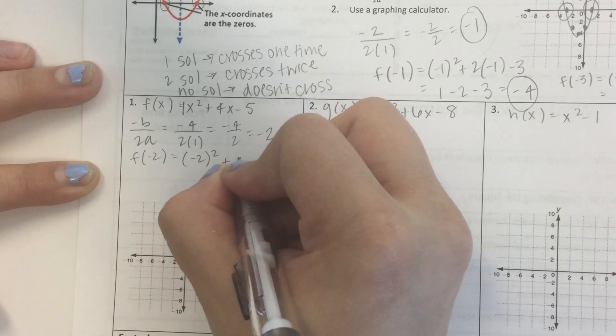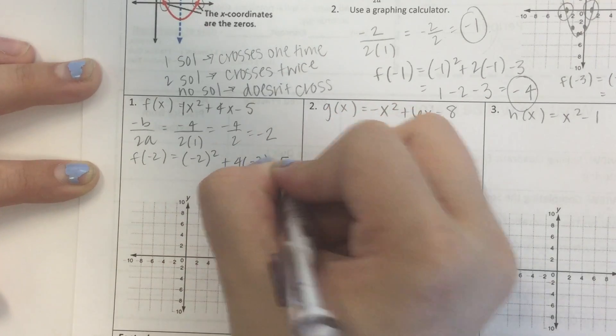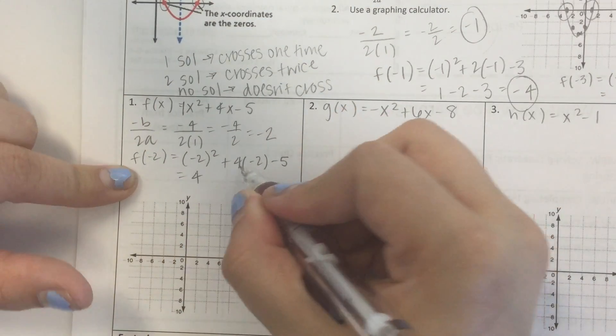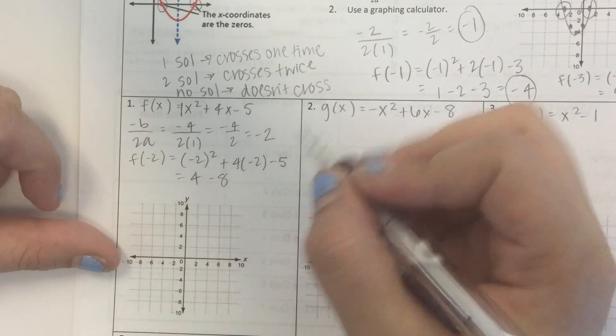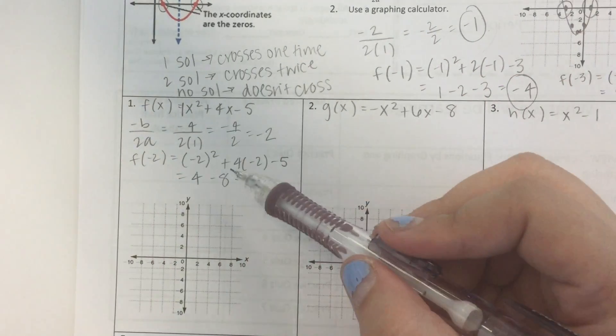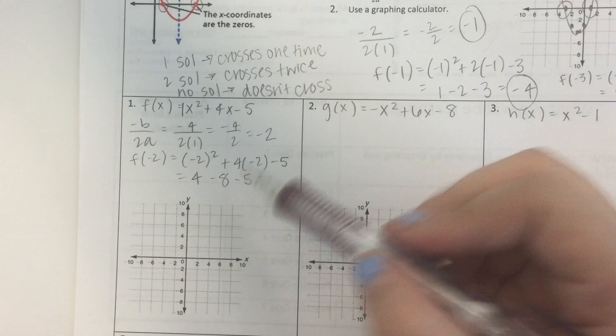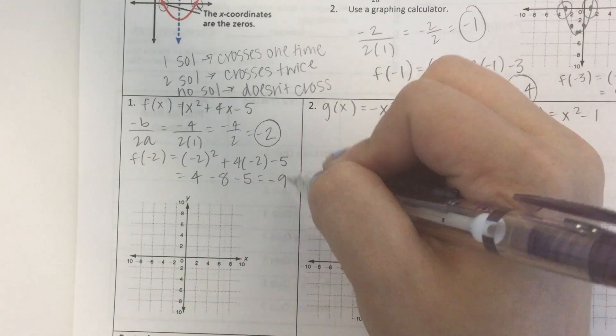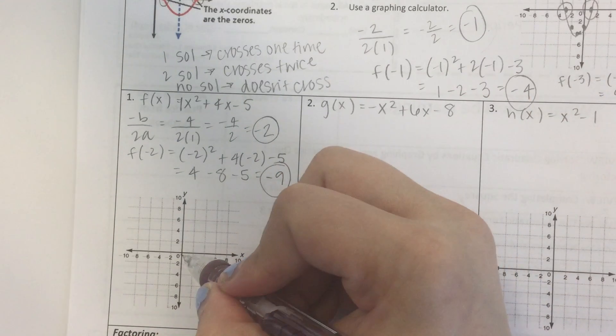Take that and plug it back in. Negative 2 squared plus 4 times negative 2 minus 5. Negative 2 squared, that's a positive 4. 4 times negative 2 is negative 8 minus 5. 4 minus 8 is negative 4. Negative 4 minus 5 is negative 9. So our vertex is at negative 2, negative 9.